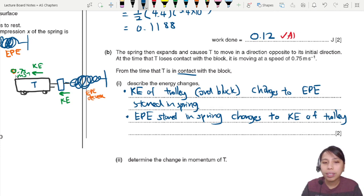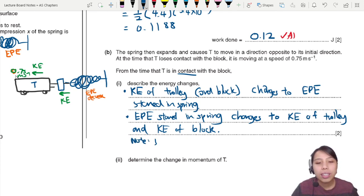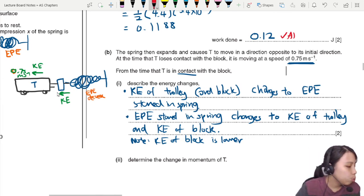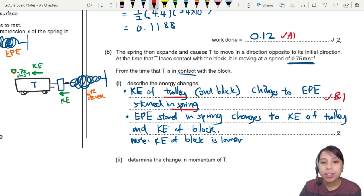Once the spring says time to release, it will convert this EPE into kinetic energy of the block as well as trolley T. The EPE stored in the spring changes to KE. You must say KE of who - KE of trolley and KE of block. Note the KE of block is lower because you end up with 0.75 m/s only, since T will eventually lose contact with the block.